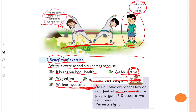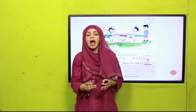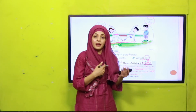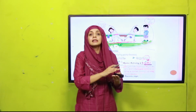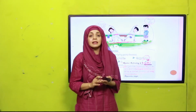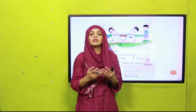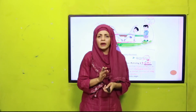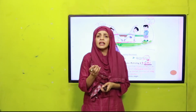On the same page there is a homework activity — activity number one. You will do this activity with your parents. Do you take exercise? Yes, everybody exercises when playing with friends and siblings. How do you feel when you exercise or play a game? Discuss it with your parents and tell them to sign here. Share with them all the benefits of exercise and ask them to share their experience of exercising. This activity is a nice and fun discussion activity.